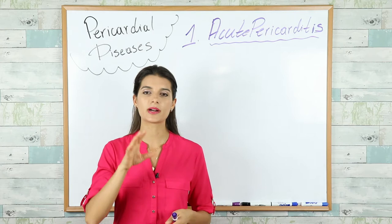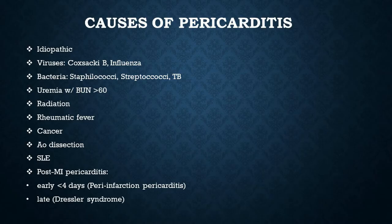Most commonly, pericarditis is due to idiopathic reasons — unknown causes. But from the ones we know, the most common include viruses, especially Coxsackievirus B and influenza virus, and bacteria like Staphylococcus and Streptococcus species. TB (tuberculosis) is also a common cause, especially in endemic areas — always think of this while reading vignettes. Consider endemic areas, immigrants, etc.